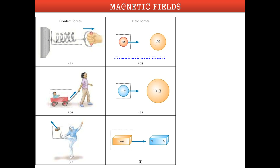The first common type of field force is gravitational force. This force is dominant between space objects — for example, the Earth attracts the Moon, and the Sun attracts the Earth and other planets. We explain this by saying the Earth produces a gravitational field around itself.